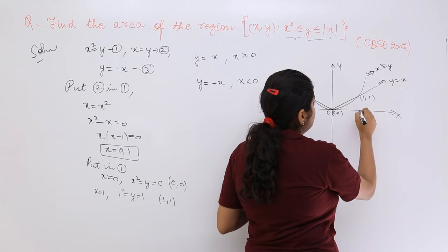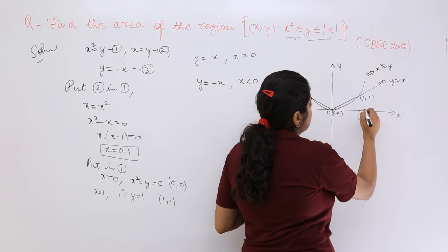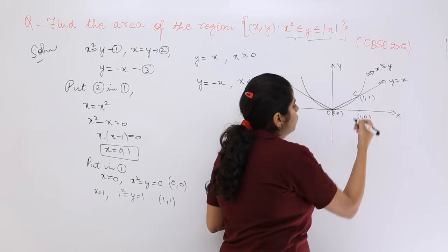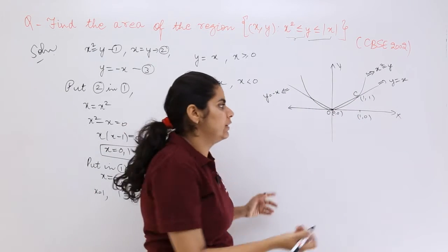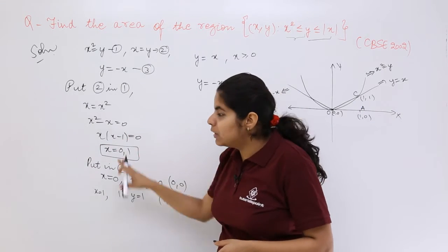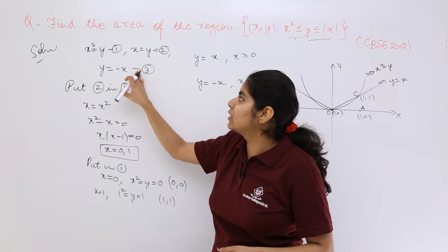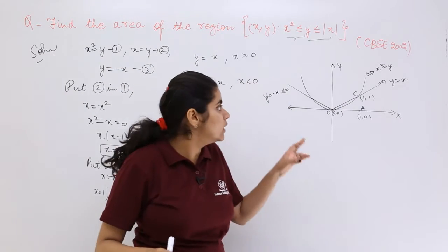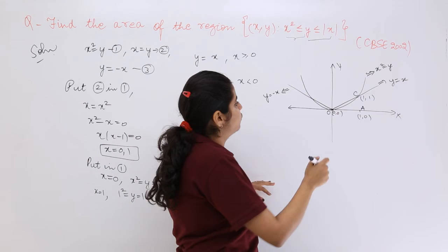So this is (1,1). So that means here it is (1,0), and see, this is point C I have named, and this may be a point, say A. Now similarly, following the similar strategy for putting 3 in 1, you can find out this point of intersection. That is a task for you.